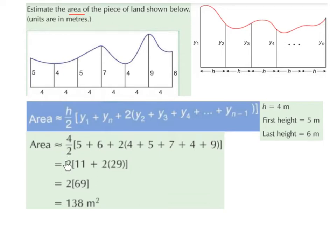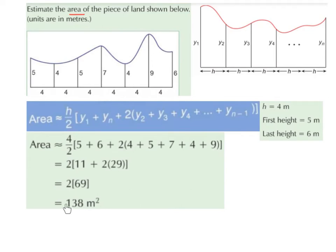4 over 2 gives us 2. 5 plus 6 gives us 11. 4 plus 5 plus 7 plus 4 plus 9 gives us 29, so 2 times 29 is 58. 2 times 29 plus 11 is 69, and 2 times 69 is 138. Make sure that you label it as metres squared because the units are in metres. So the approximate area of this piece of land is 138 metres squared.